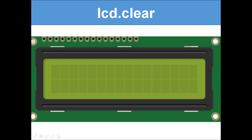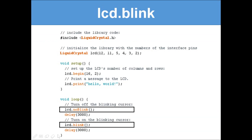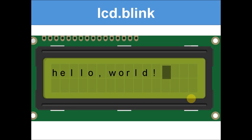Now we're getting more complicated — `lcd.blink()`. This will blink the box after the last position where you wrote text. It will alternate: blink on, blink off, repeatedly filling in and clearing that box. You can see the example in the video — it's just blinking on and off.